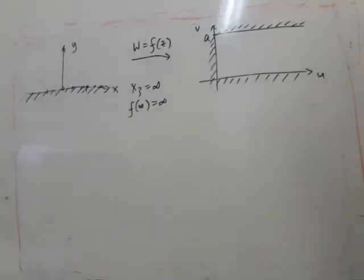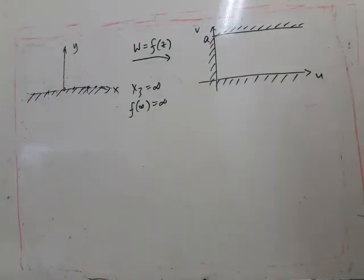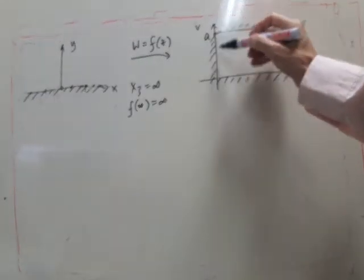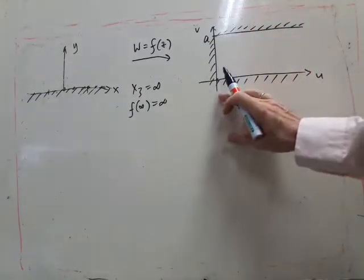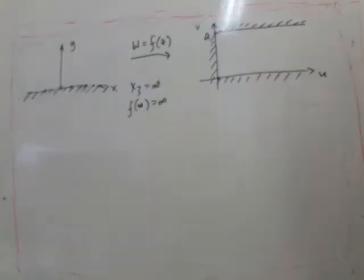So that's our first piece of information. Now we need to choose, well the other corners are here and here. We need to choose where to put x1 and x2 which gets mapped to w1 and w2.